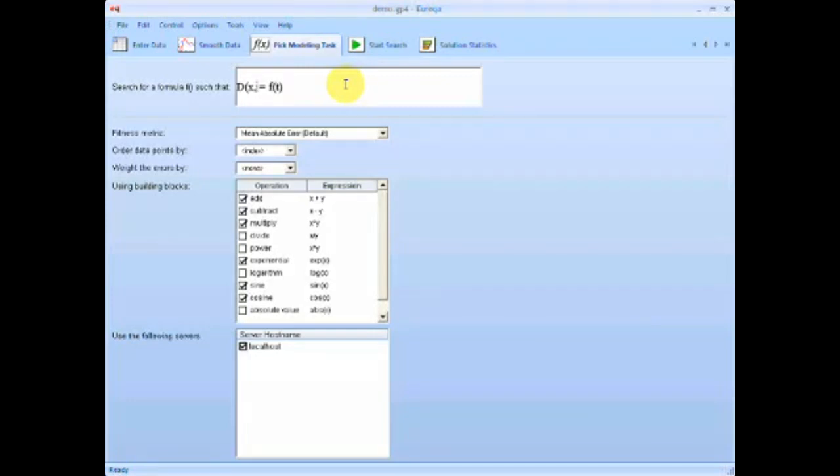We can look at the derivative of the pendulum angle by specifying this d operator. So we want to take the derivative of x with respect to t, and we want to do this twice to get the second derivative.